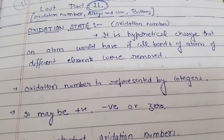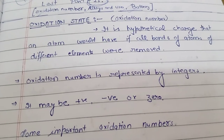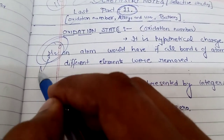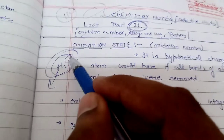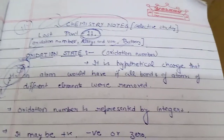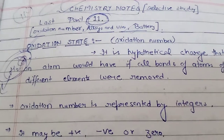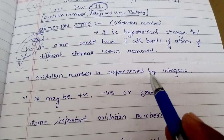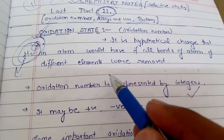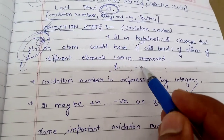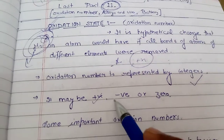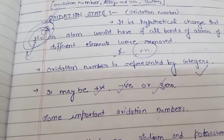Oxidation number is a hypothetical charge that an atom would have if all the bonds of atoms of different elements were removed. The oxidation number is represented by an integer and may be negative, positive, or zero.